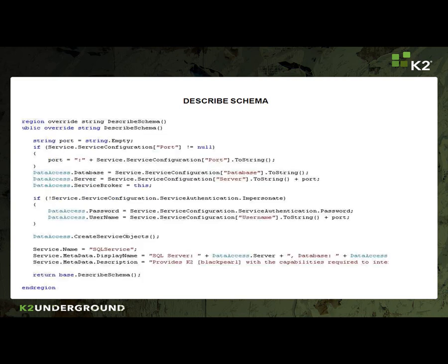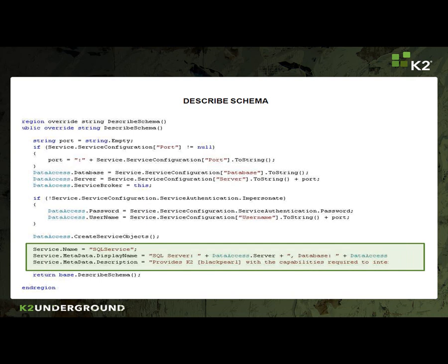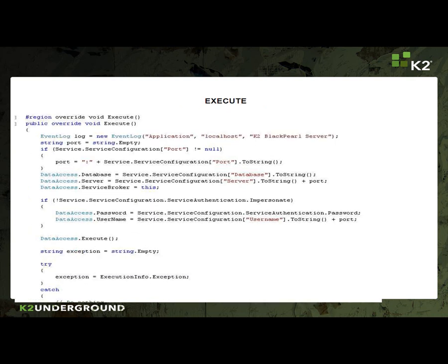In the describe schema section, the describe schema method is the most critical method to override. Like the get config section, it is called when the service instance is created or refreshed in the management console. This method tells the Smart Object server what service object this service handles and describes the service objects in detail, such as their properties and methods. You can see here that we've given the service a name, as well as a display name and description. Next we see the execute section. The Smart Object server calls the execute method when a method on a service object needs to be executed. This is where code is placed to execute service object methods. The service broker calls this method to execute the appropriate logic on the back end system via the service package.